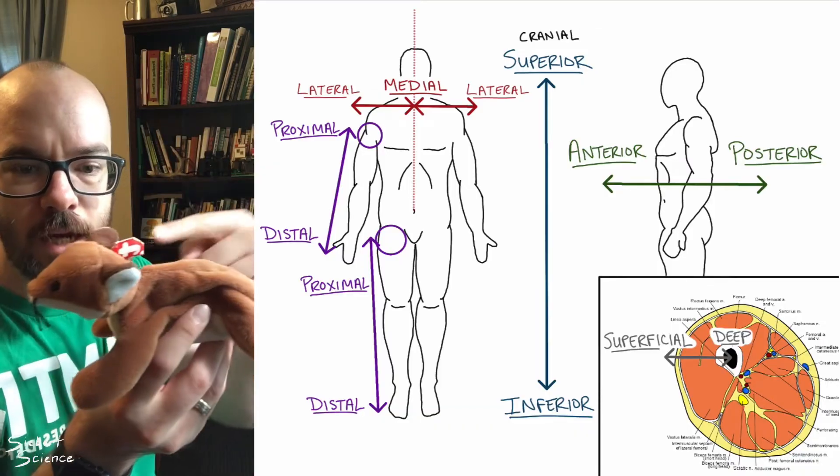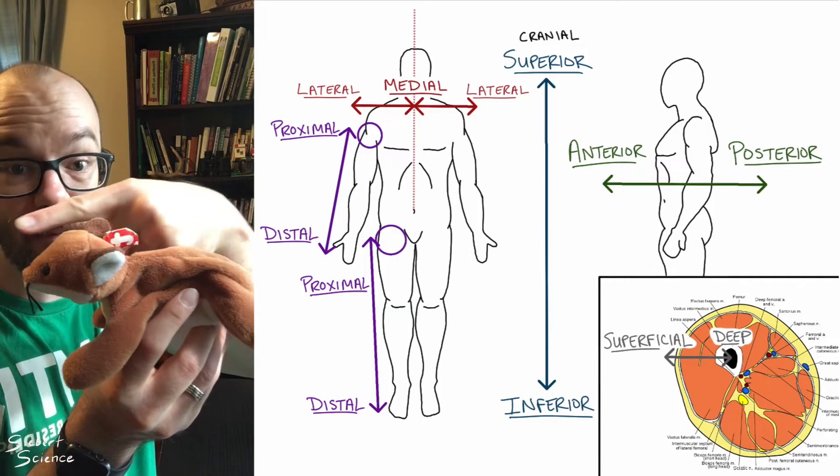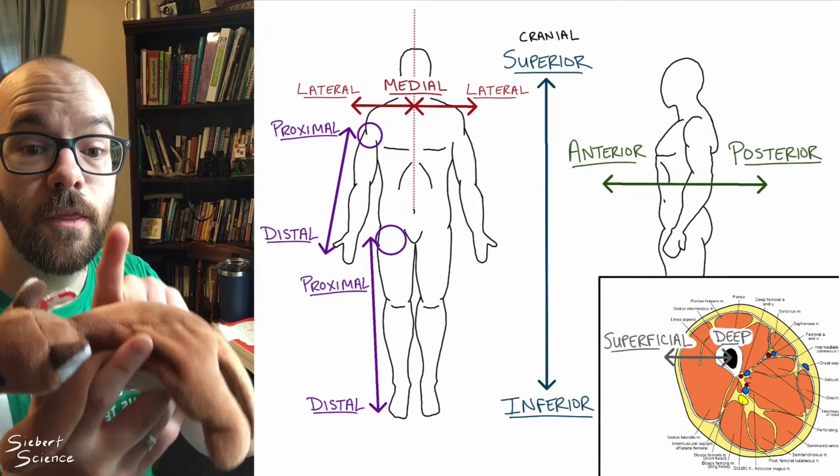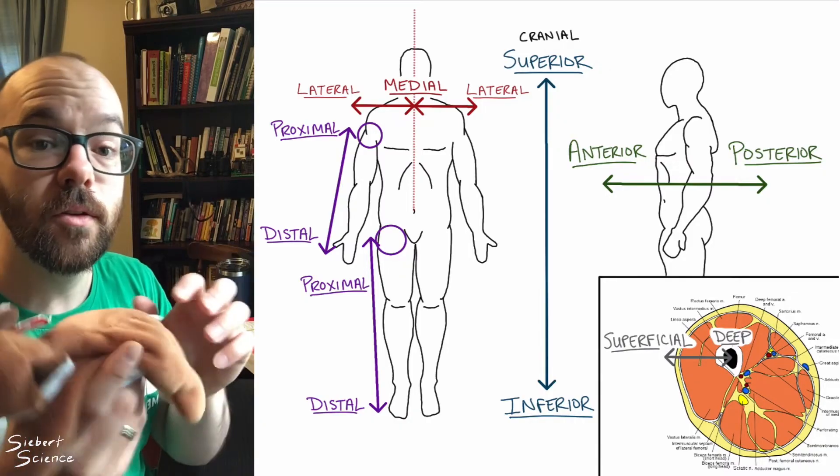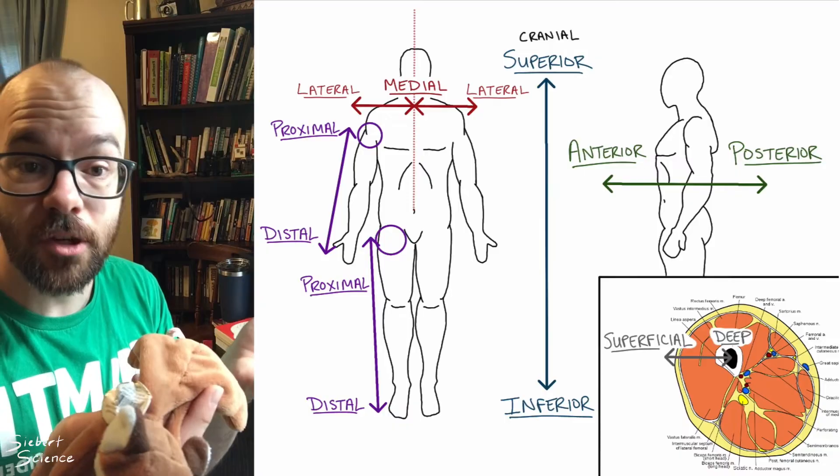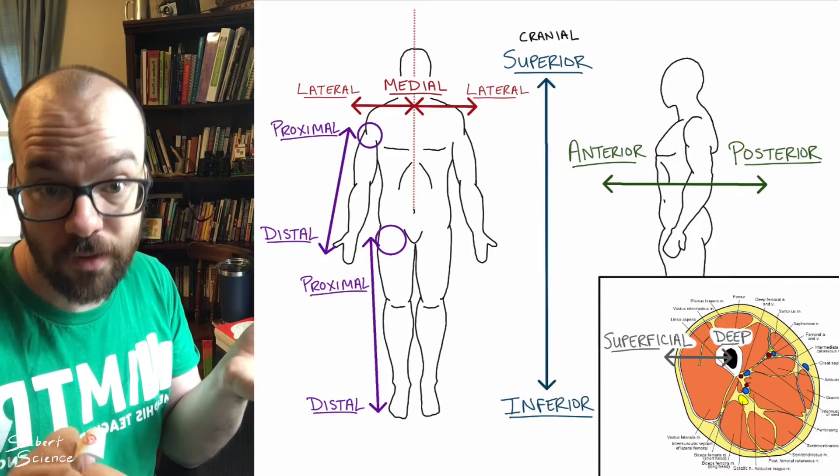For Sly, cranial means toward the head, which would be the same as anterior. Superior would be this direction, which would not be toward its head. It's toward its back. So it's important to know some of these other terms if you're learning about other animals than just humans.